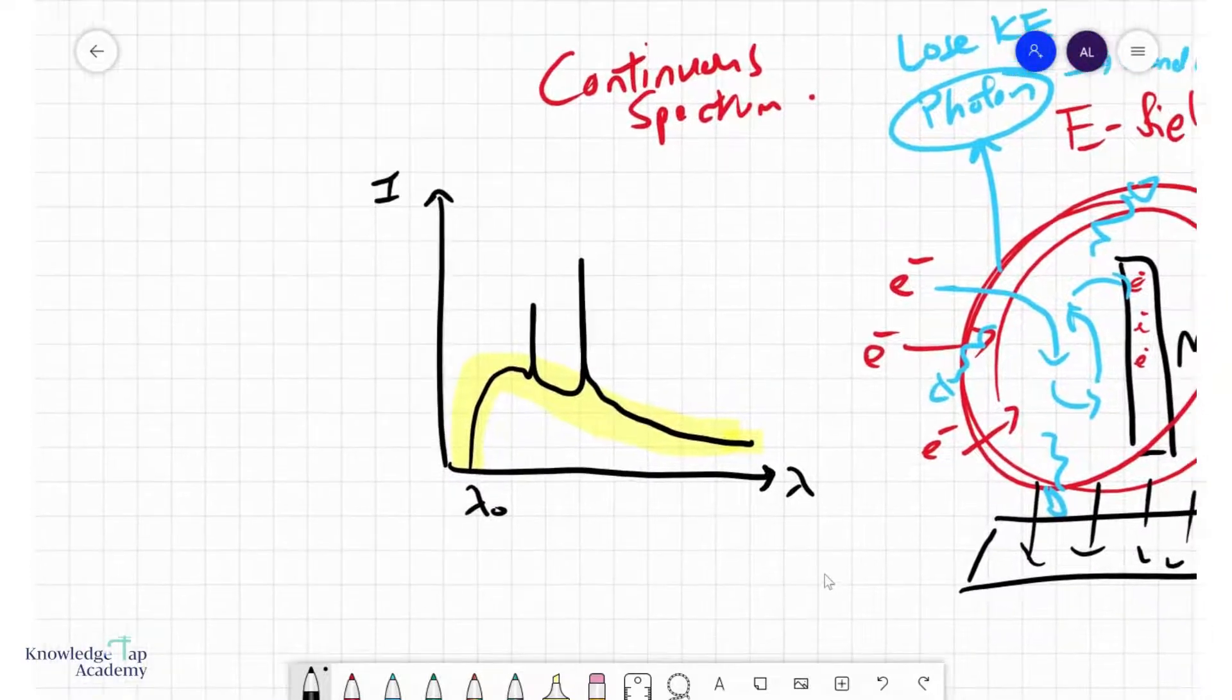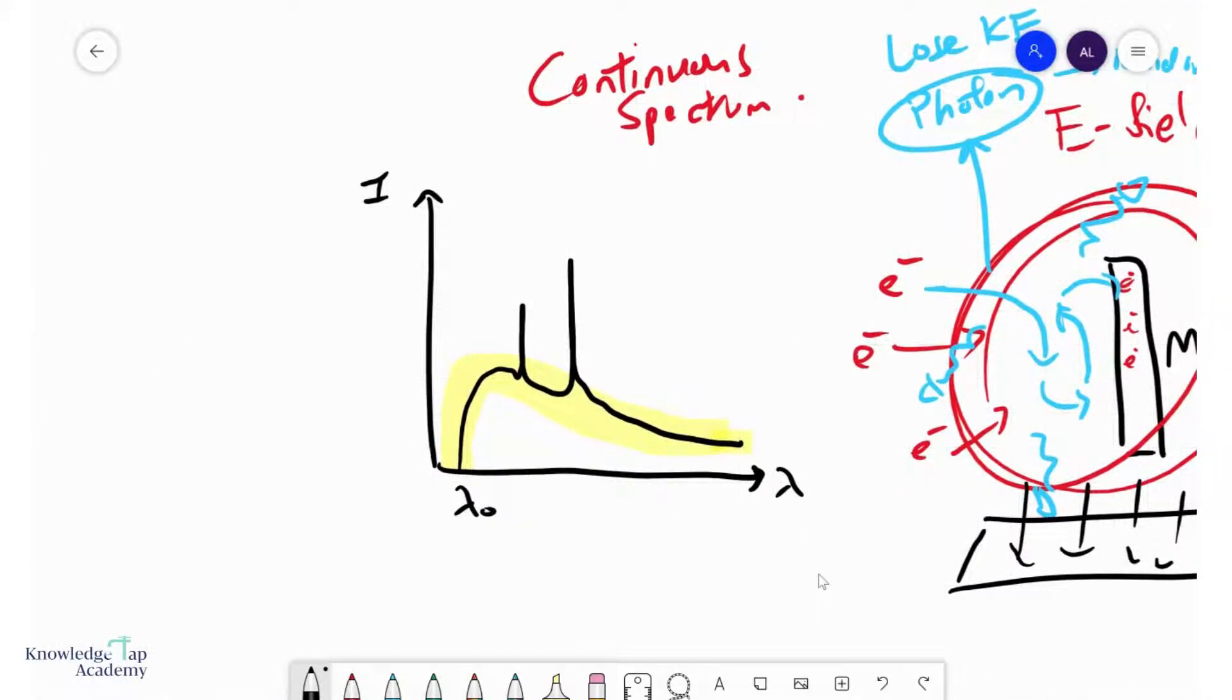And so the continuous spectrum is quite useless. It's just noise, if you like. And so you also expect that every time you repeat the experiment, the peaks will remain at the same position, but this spectrum may change a little bit every time you repeat the experiment.